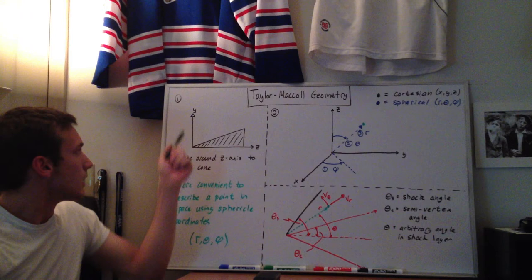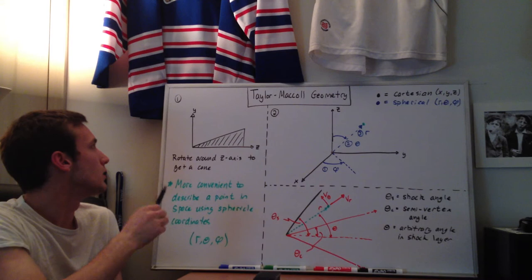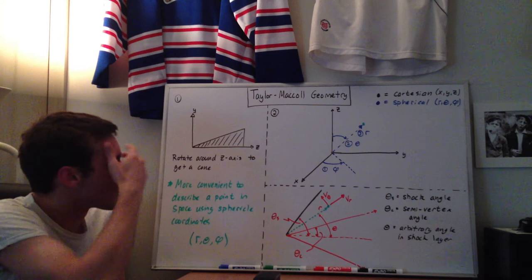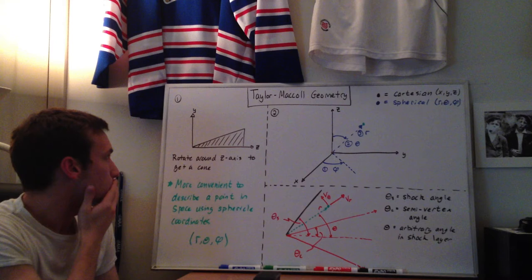Up here I've drawn in two dimensions and Cartesian coordinates just a triangle, so the z-axis here, the y-axis here, and the x-axis is going into the page. You can see that we have a 2D triangle. If we rotate this triangle around the z-axis, you'll end up with a cone in three dimensions.